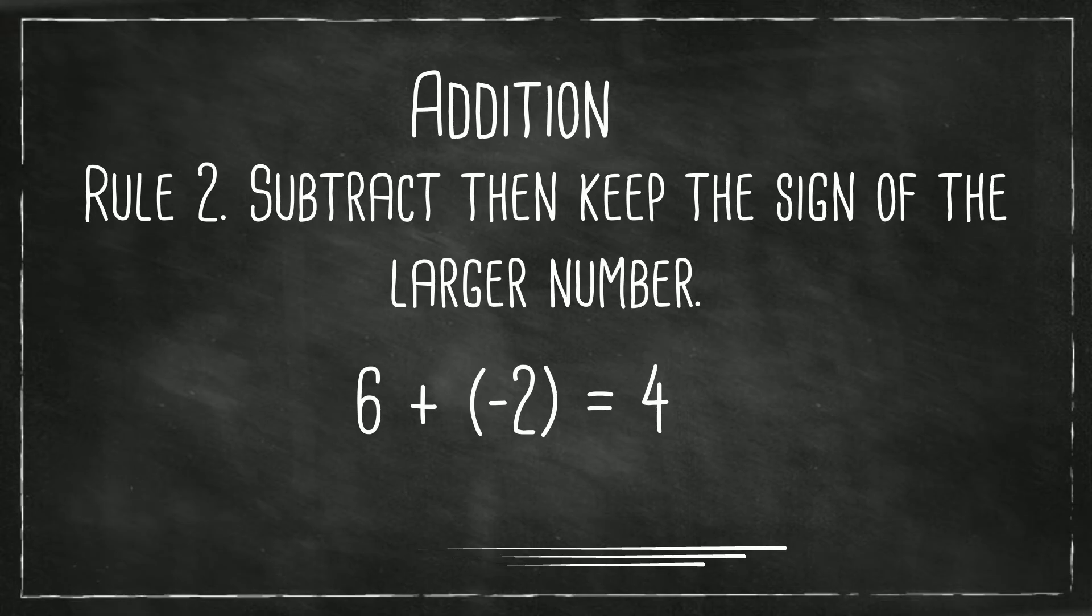Now negative 6 plus 3 equals a negative 3. It becomes negative because the absolute value of 6 is greater than the absolute value of 3. If this confuses you, just drop the sign and see which number is larger.